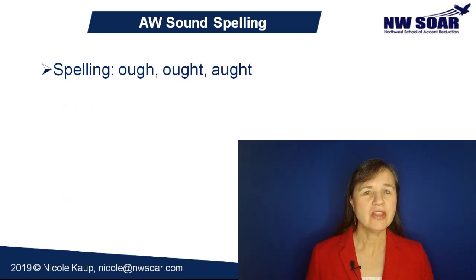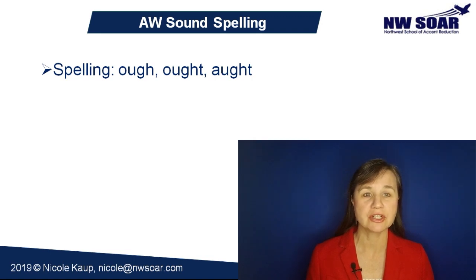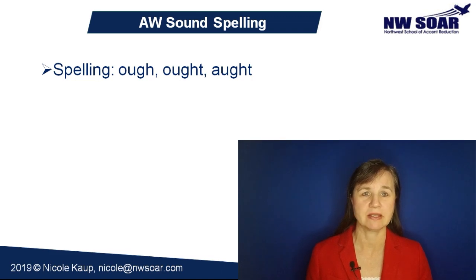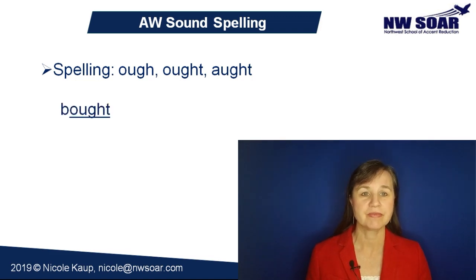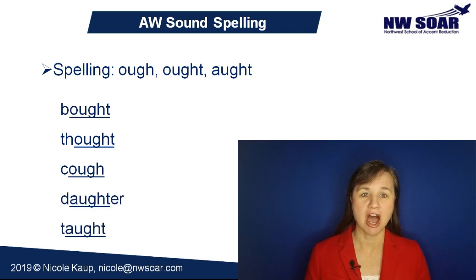Then there are a few words that have a really unusual spelling — O-U-G-H, sometimes with a T at the end, or A-U-G-H-T spellings, like in bot, thought, cough, daughter, and tot.